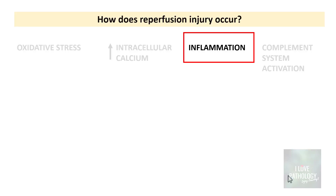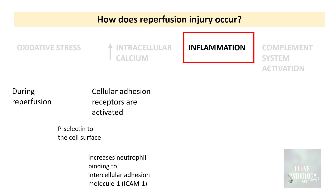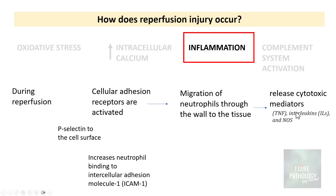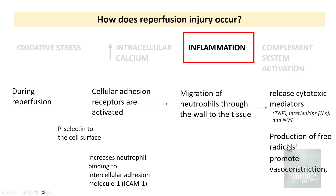The third important concept of reperfusion injury is inflammation. During reperfusion, cellular adhesion receptors are activated — for example, P-selectin on the cell surface — resulting in increased neutrophil binding to the intracellular adhesion molecule ICAM-1, leading to migration of neutrophils through the vascular wall into the tissue. These neutrophils release cytotoxic mediators like tumor necrosis factor, interleukins, and nitric oxide synthase. This also leads to production of more free radicals and promotion of vasoconstriction.